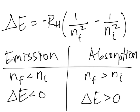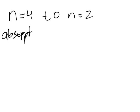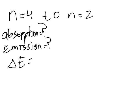Now, let's solve a quick problem using this. We have an electron that transitions from n=4 to n=2 in an atom. So the questions are, is this absorption or emission? What is the value of the delta E? And what is the wavelength of the electron or the light?